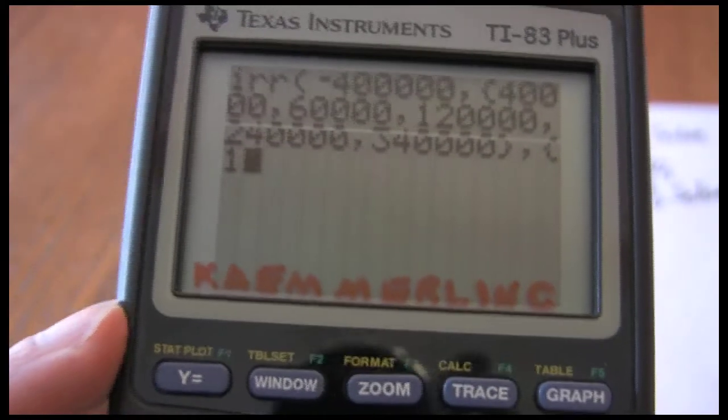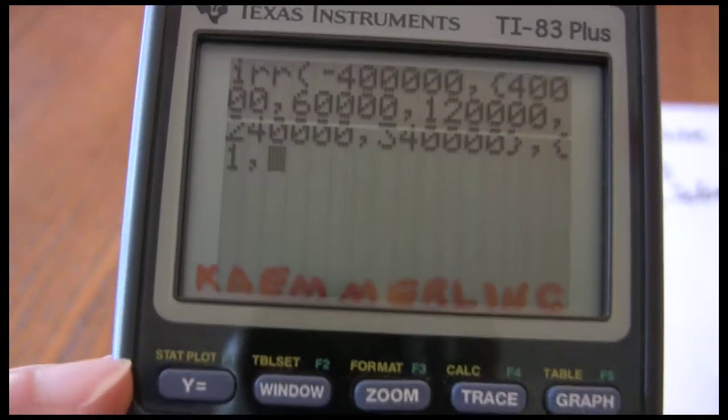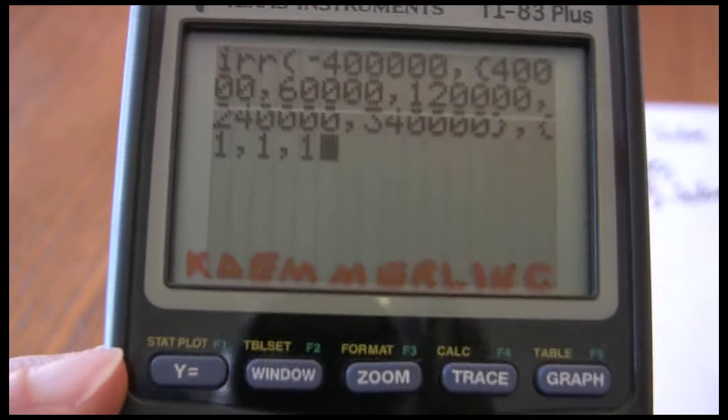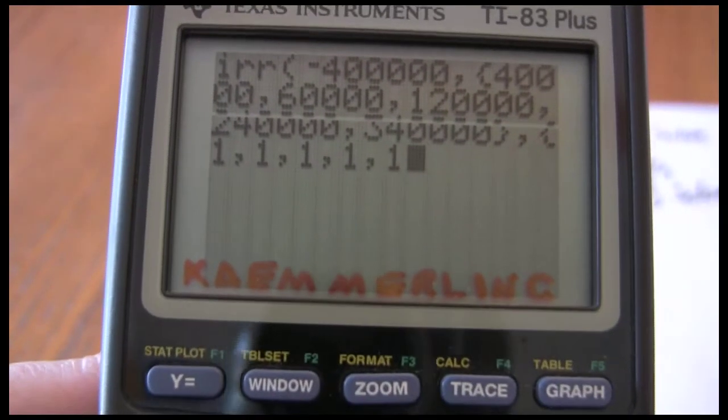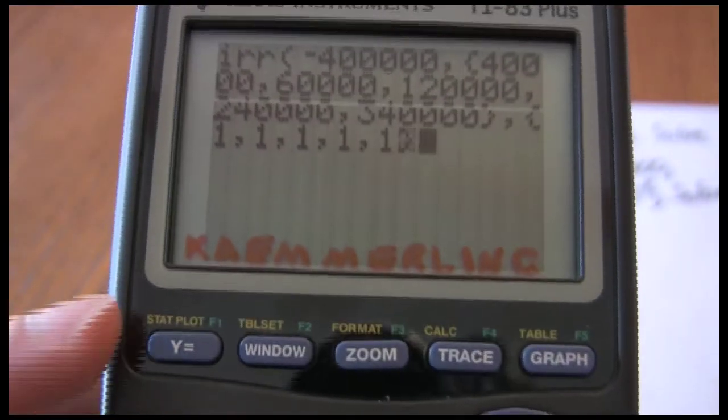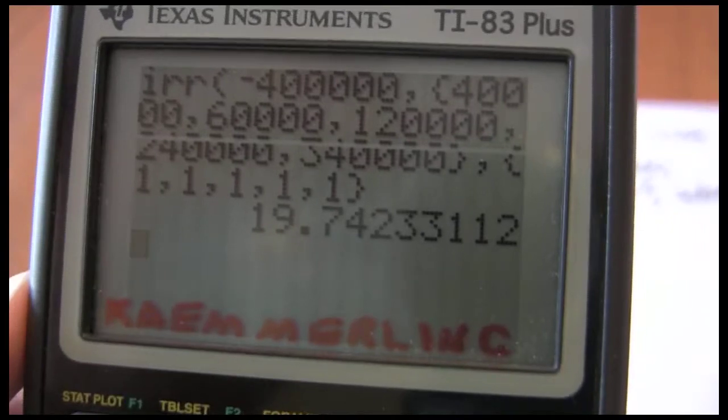Go ahead and put in the frequencies. Five cash flows each with a frequency of one. And now I can solve. I get an internal rate of return of 19.74%.